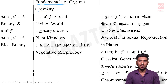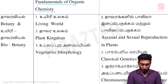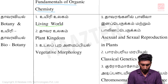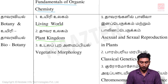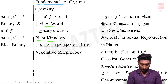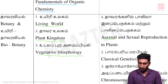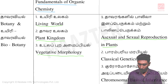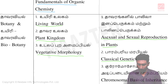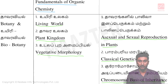Next, Botany. For 11th standard students: Unit 1: Living World. Unit 2: Plant Kingdom. Then Unit 3: Vegetative Morphology. For 12th standard, the portions are Unit 1: Asexual and Sexual Reproduction in Plants. Then Unit 2: Classical Genetics. Then Unit 3: Chromosomal Basis of Inheritance.